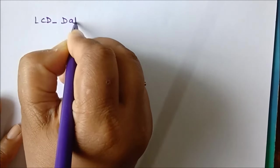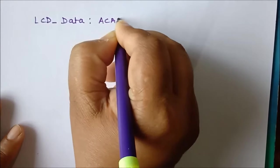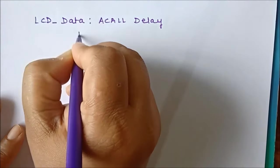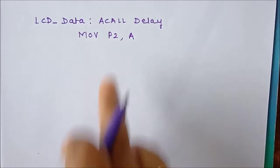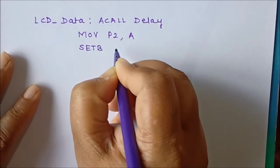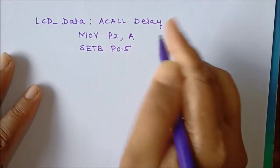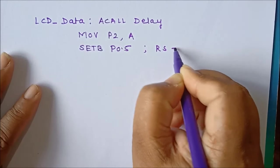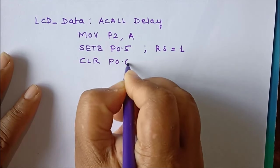Below the LCD_command subroutine, we write the LCD_data subroutine. The same steps are repeated: first we call the delay subroutine, then we move the data in the accumulator onto the data bus at port P2. For the data subroutine, the RS pin P0.5 must be set to logic 1 using SETB P0.5, which selects the data register. Then we clear P0.6 to set R/W to 0 for a write operation.